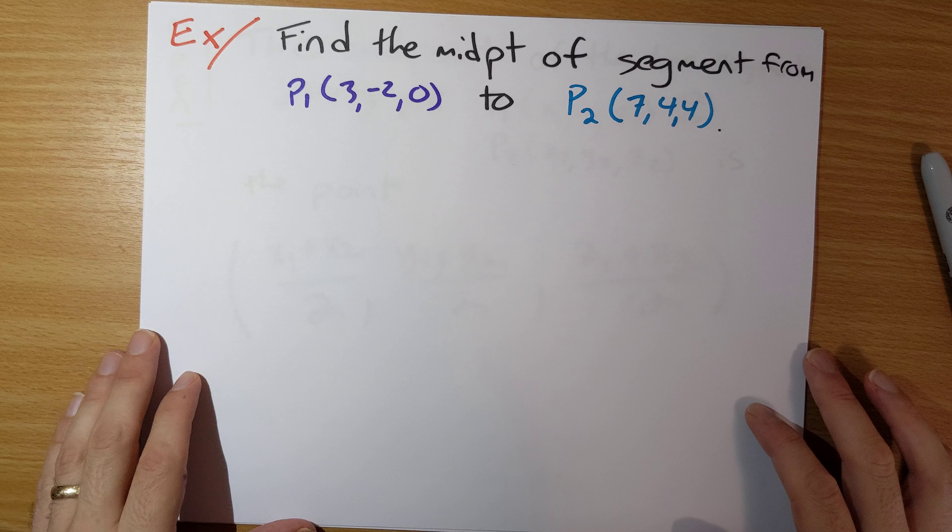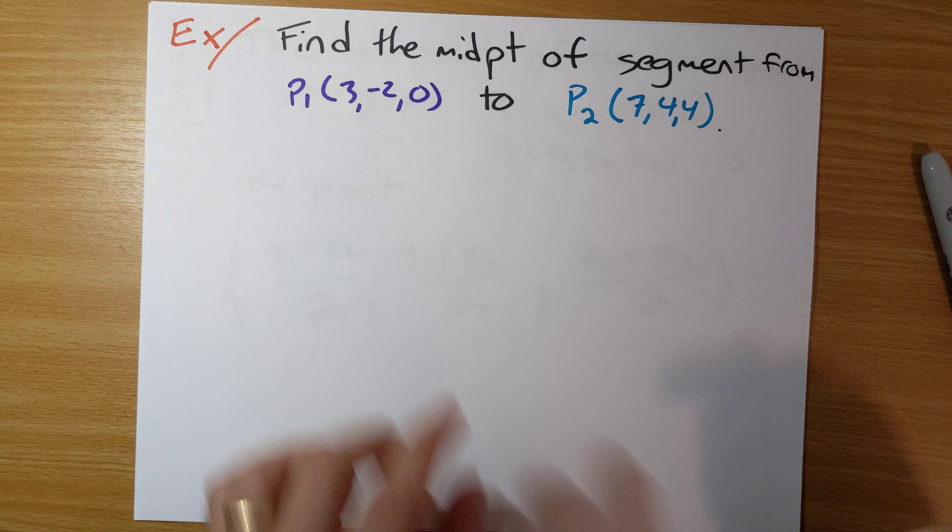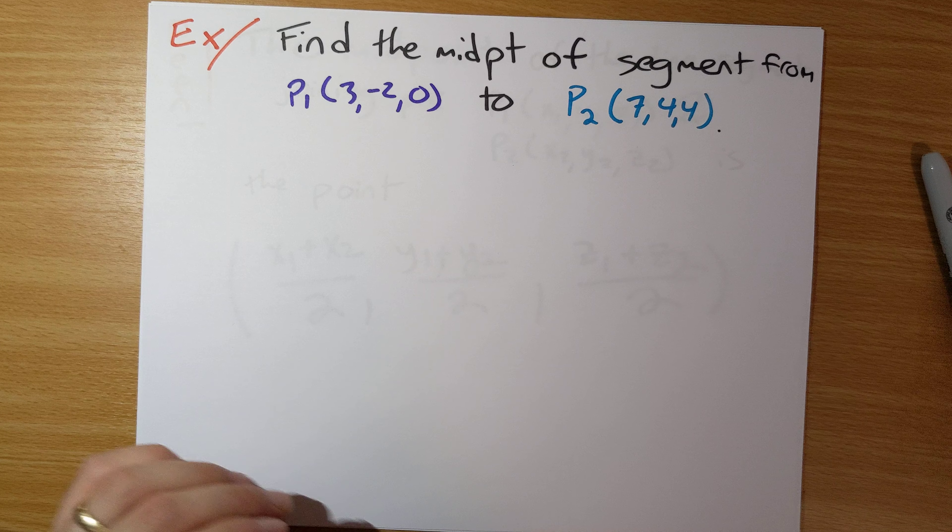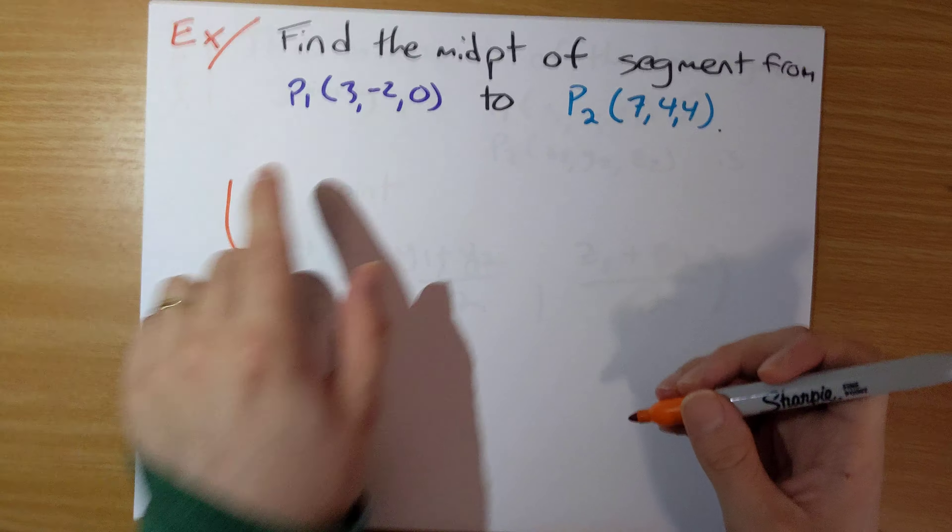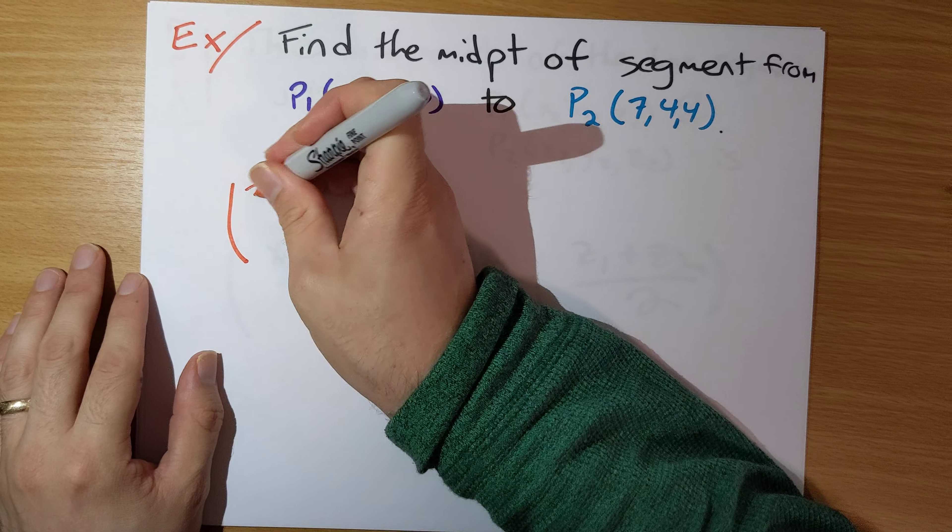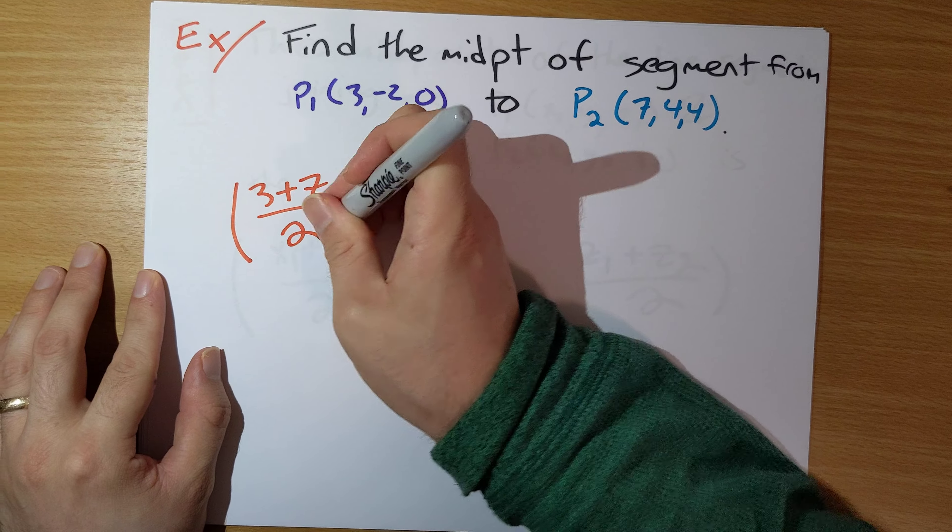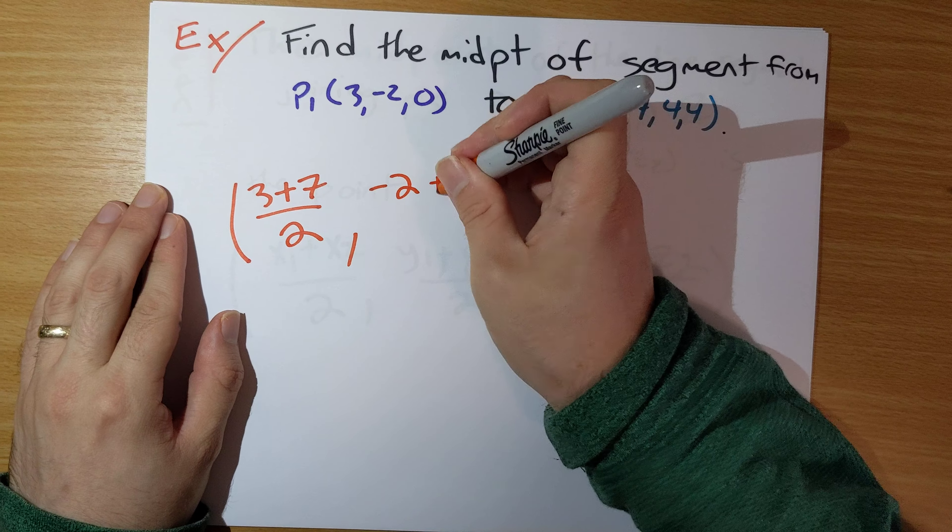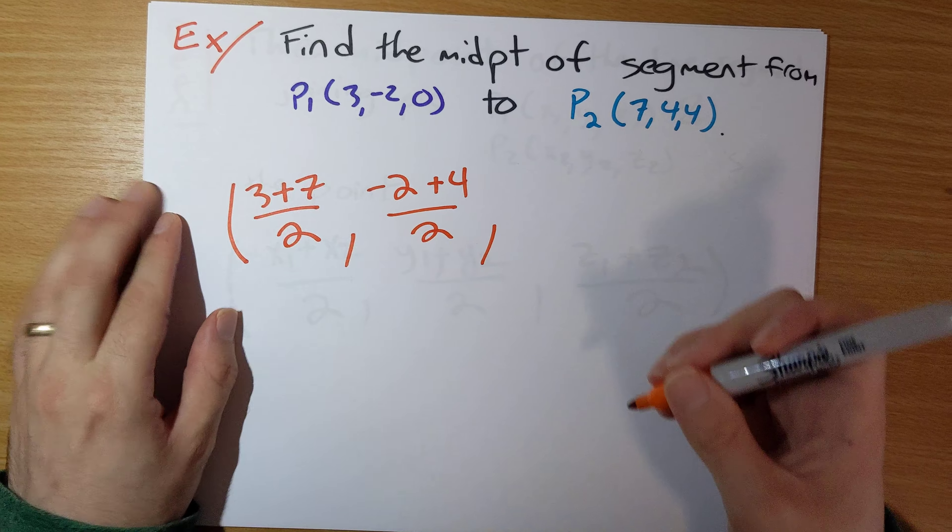Now let's do one example with this. Find the midpoint of the segment from this point to this point. All we have to do is 3 plus 7 divided by 2, negative 2 plus 4 divided by 2.